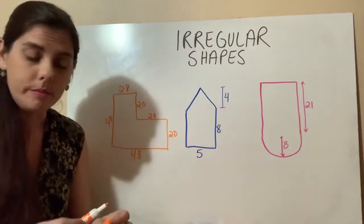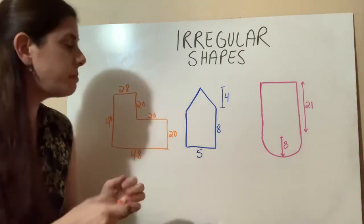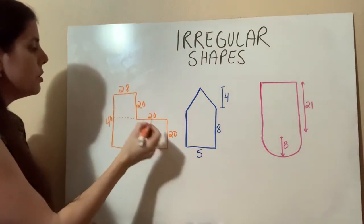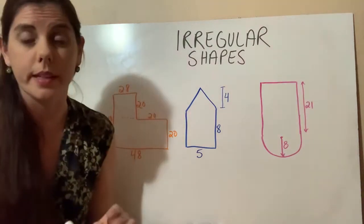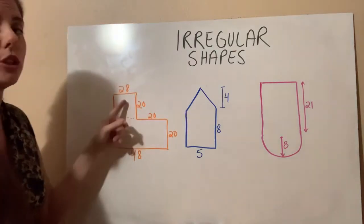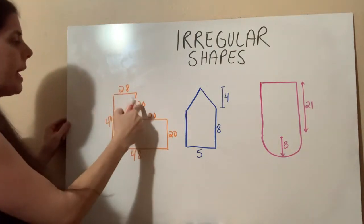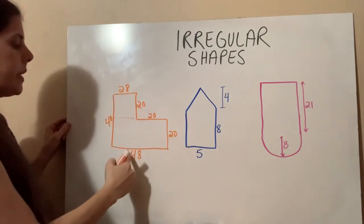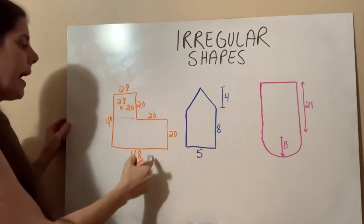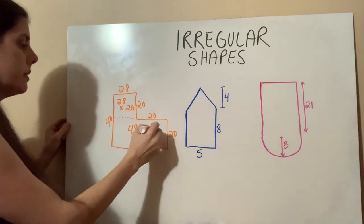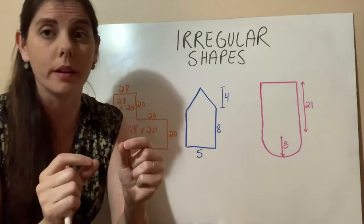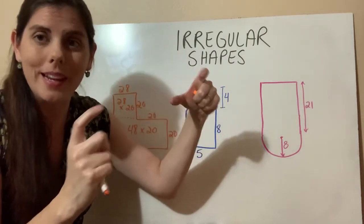To get the area, there are two ways you can do this. One way is to break this into two smaller rectangles — that's called decomposition, or decomposing it. So you're breaking it down into two smaller ones: 28 times 20 for this one, and then 20 times 48 for this one. So you do 28 times 20 and then add it to 48 times 20.